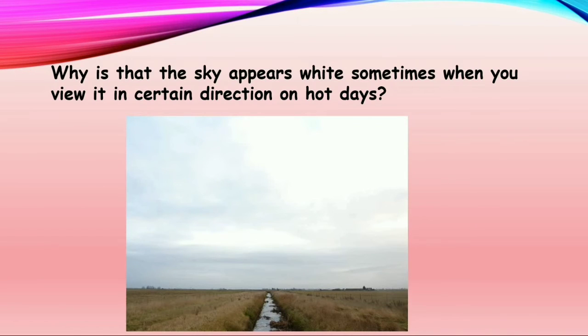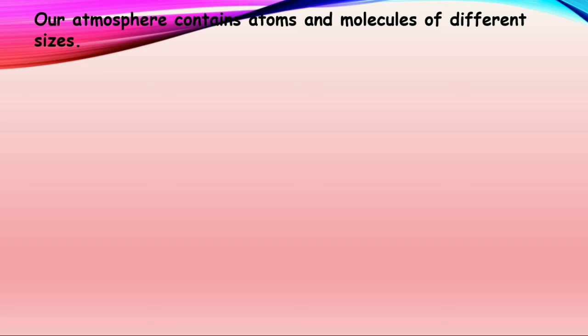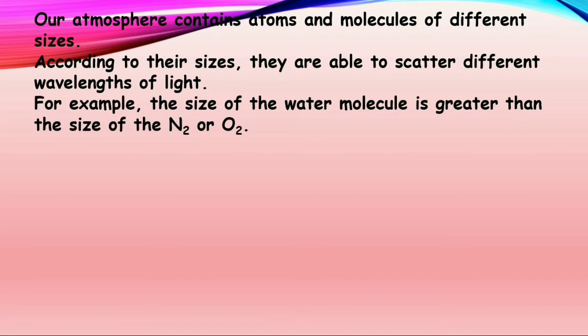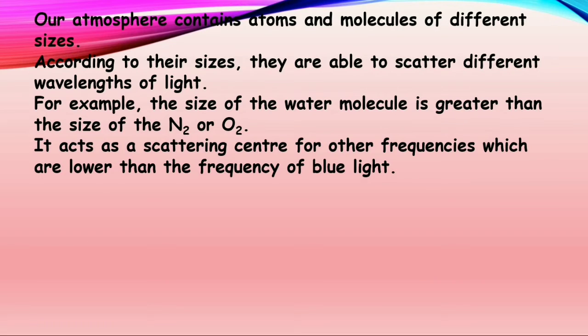So why is that the sky appears white sometimes when you view it in certain directions or on hot days? Our atmosphere contains atoms and molecules of different sizes. According to their sizes, they are able to scatter different wavelengths of light. For example, the size of the water molecule is greater than the size of the nitrogen and oxygen. It acts as a scattering center for the other colored lights, means other frequencies which are lower than the frequency of blue light.